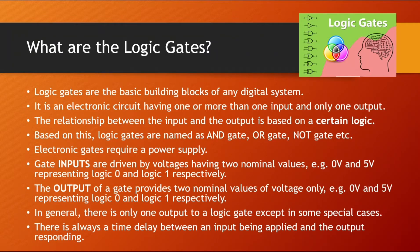0V is considered as logic 0 or bit 0 and 5V is considered as logic 1 or bit 1. Similarly, if they produce the output which is around 0V, then that will be considered as logic 0. And if they produce 5V or around 5V, then it will be considered as logic 1 or bit 1. In general, the output that logic gates gave is 1. But in special cases, there can be multiple output bits also. One thing to note here is that there will always be a time delay between the inputs given and the output produced.